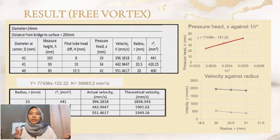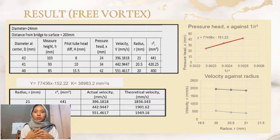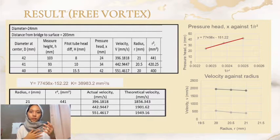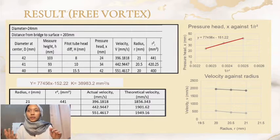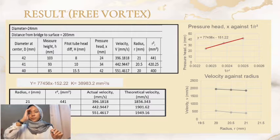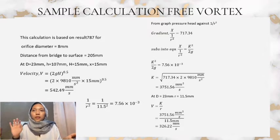It also shows the same pattern where the pressure height increases. After obtaining the gradient, we can calculate the value of k to find the theoretical velocity. The graph of velocity against radius in Figure 4 shows that both actual and theoretical velocity values are slightly decreasing and almost constant. The same applies to orifice diameter 24mm.